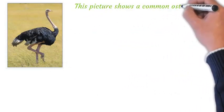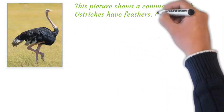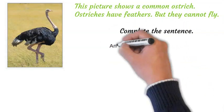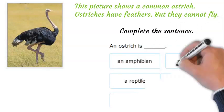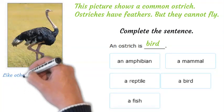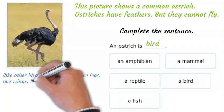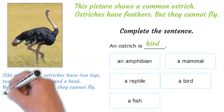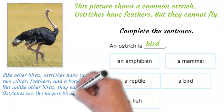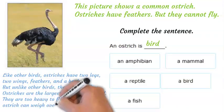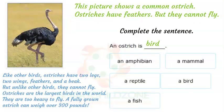This picture shows a common ostrich. Ostriches have feathers, but they cannot fly. Like other birds, ostriches have two legs, two wings, feathers, and a beak — but unlike other birds, they cannot fly. Ostriches are the largest birds in the world and are too heavy to fly. A fully grown ostrich can weigh over 300 pounds.